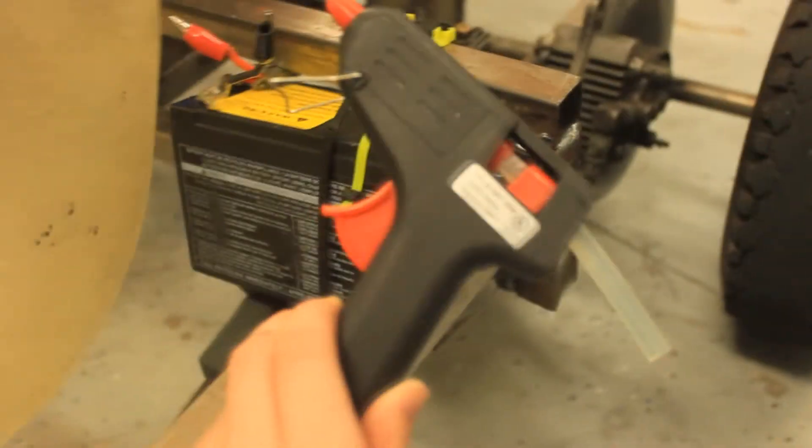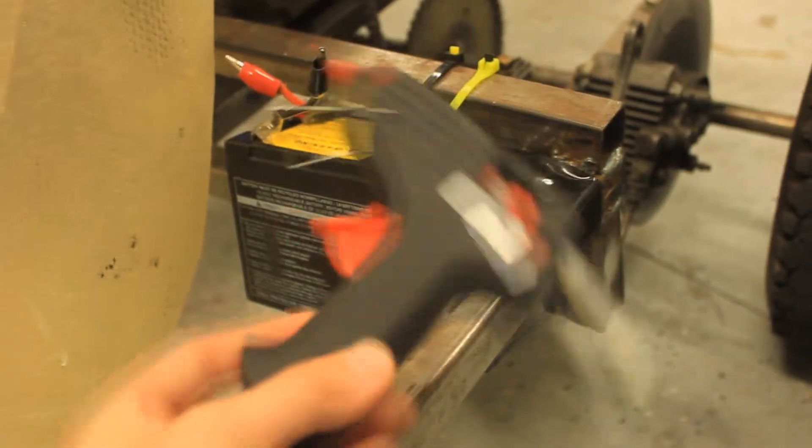So I'll simply be using some hot glue because of how light the component is. So I'm just going to mount it right there, which is the left side of the seat.